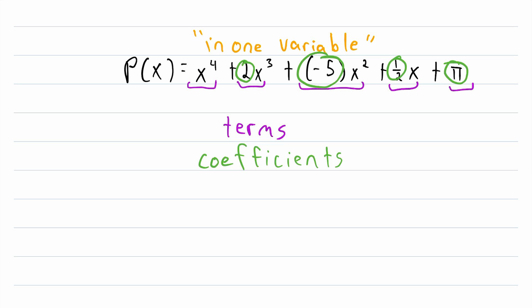All right, so a polynomial is an expression made up of the addition of terms, and the terms have coefficients, which are real numbers being multiplied by the variables.